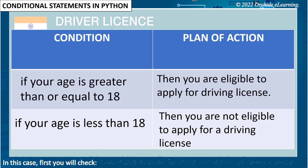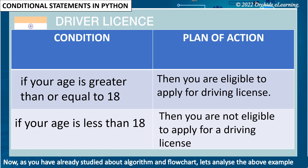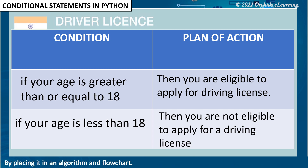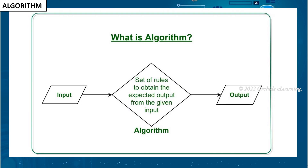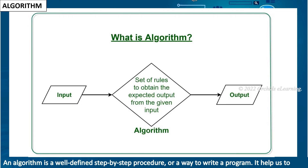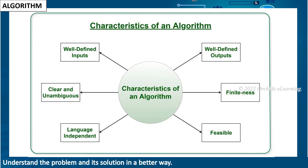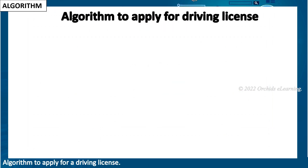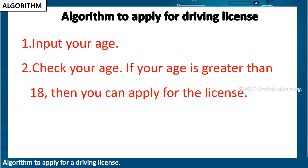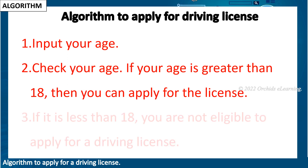Now, as you have already studied algorithm and flowchart, let's analyze the above example. An algorithm is a well-defined step-by-step procedure or a way to write a program. It helps us understand the problem and its solution in a better way. Algorithm to apply for a driving license: input your age, check your age — if your age is greater than 18 then you can apply for the license; if it is less than 18 then you are not eligible.